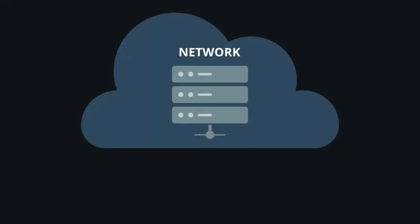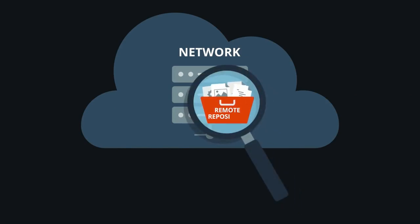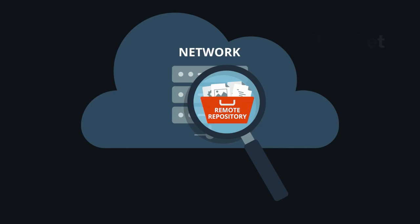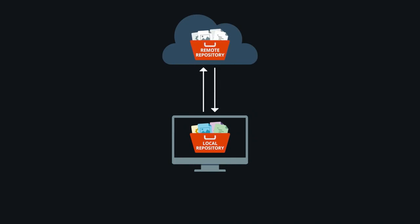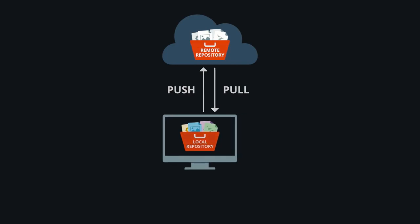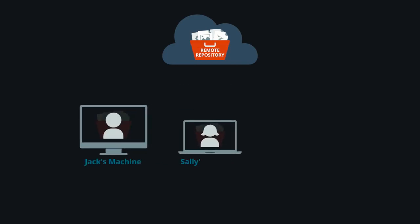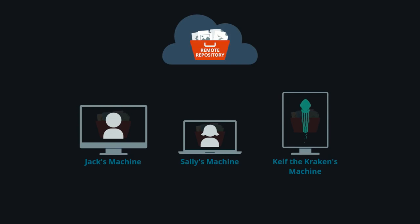A remote repository — often just called a remote — is a Git repository hosted on the internet or another network; in our case, it's Bitbucket. Cloning a remote creates a local version on your machine, giving you a sandbox to experiment without affecting the original code base. Cloning also establishes a connection between your local repository and the remote on Bitbucket, enabling push and pull actions. The power of Git is that multiple clones can be created by team members, enabling efficient collaboration with less risk to the original code.